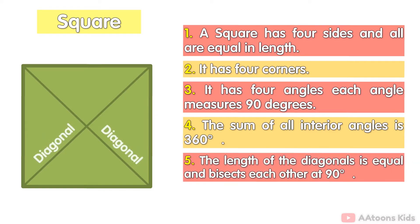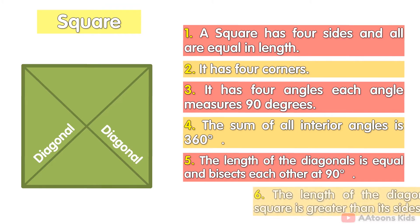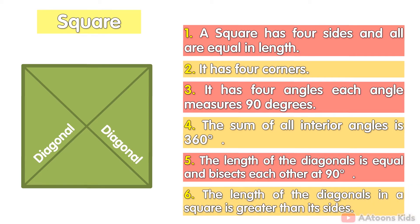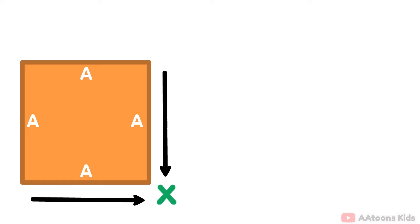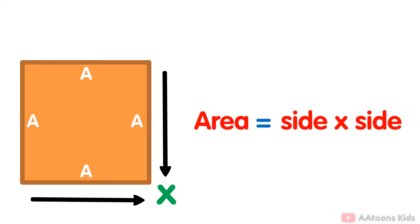The length of the diagonals are equal and bisect each other at 90 degrees. The length of the diagonal in a square is greater than its sides. Area: the area of a square is calculated by multiplying the length of one side by itself. Therefore, area of a square equals side multiplied by side.